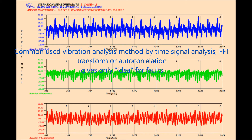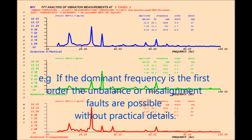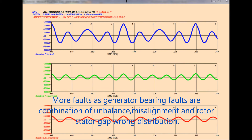Commonly used vibration analysis methods — time signal analysis, FFT transform, or autocorrelation — give only a general idea of faults. For example, if the dominant frequency is the first order, unbalance or misalignment faults are possible, but without practical details. More complex faults such as generator bearing faults are a combination of unbalance, misalignment, and rotor-stator gap wrong distribution.